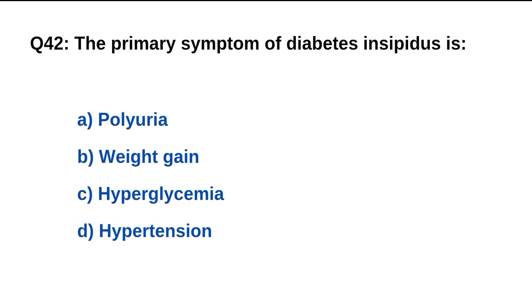Question number 42. The primary symptom of diabetes insipidus is? The right option is A: Polyuria.